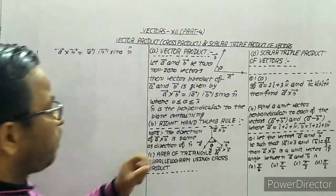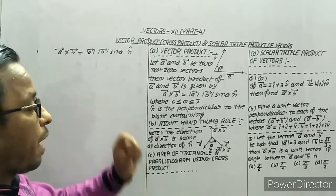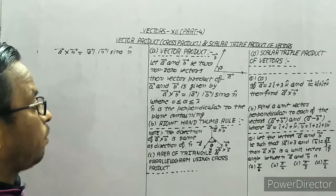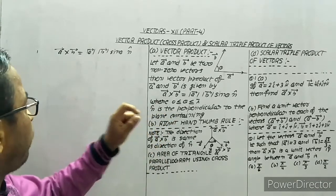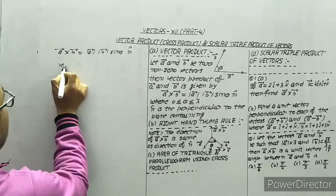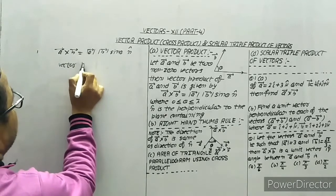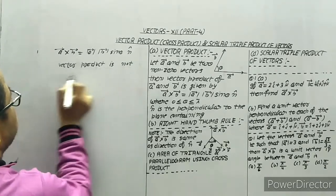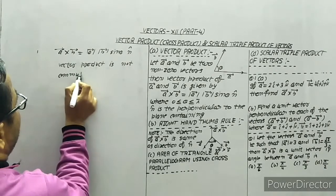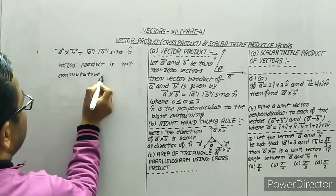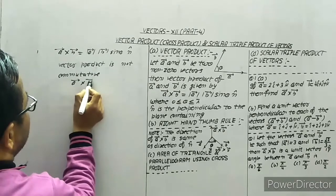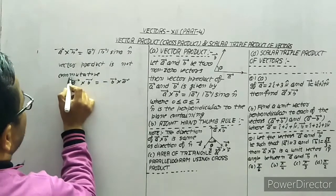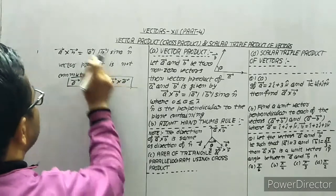Since the direction is changing depending on the order, this is why the name 'vector product' is given. From this discussion, we observe that vector product is not commutative. This means a cross b is always equal to minus b cross a, and we will use this result to calculate many further results.